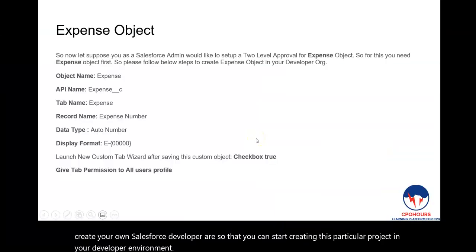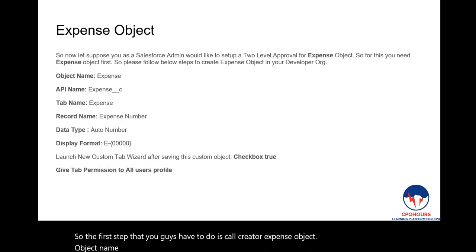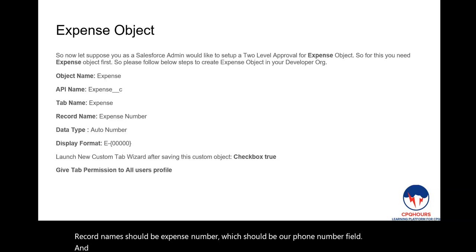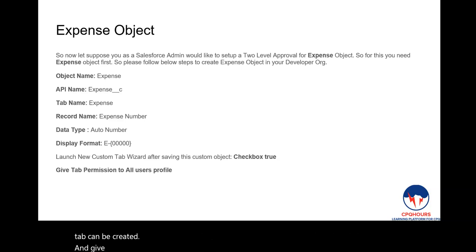The first step is to create an Expense custom object. The object name should be 'Expense,' the API name should be 'Expense__c,' and the record name should be 'Expense Number,' which should be an Auto Number field. While creating this Expense object, make sure to check the Tab Wizard page so that a tab is created, and grant tab permissions to all user profiles.